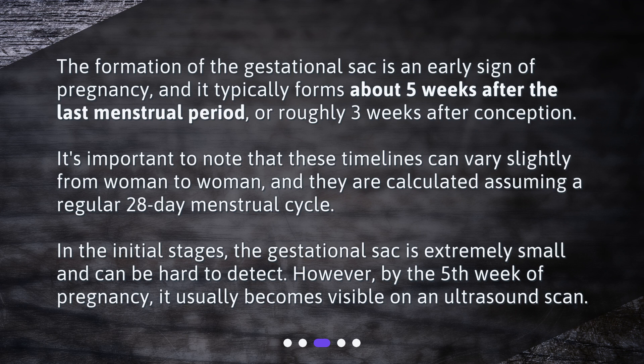In the initial stages, the gestational sac is extremely small and can be hard to detect. However, by the fifth week of pregnancy, it usually becomes visible on an ultrasound scan.